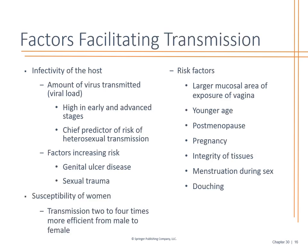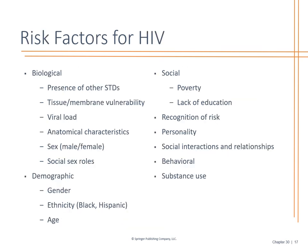Factors facilitating HIV transmission include viral load and susceptibility — remember, you need a host able to accept the virus — as well as the risk factors previously discussed. Biological risk factors include the presence of other STDs, viral load, sex roles, gender, ethnicity, and age — your demographics. Looking at health disparities with poverty, lack of education, and social interactions — those are all very important.